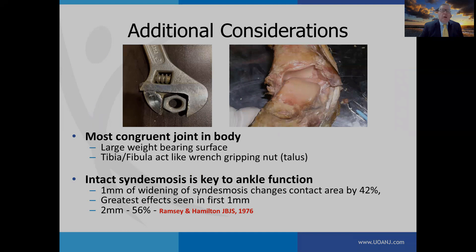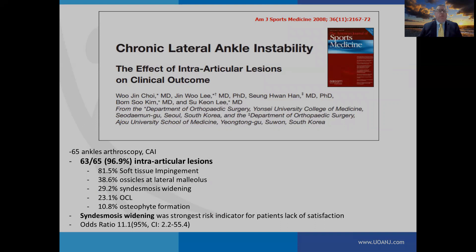The ankle is the most congruent joint in the body. It has a large weight-bearing surface, and the tibia and fibula act like a wrench gripping a nut. If the syndesmosis is disrupted, it's not going to be able to grip the talus and function appropriately. Ramsey and Hamilton did a landmark paper in 1976 where they noted that a one millimeter increase of widening of the syndesmosis changes the contact area by 42%. The syndesmosis plays a pretty significant role.